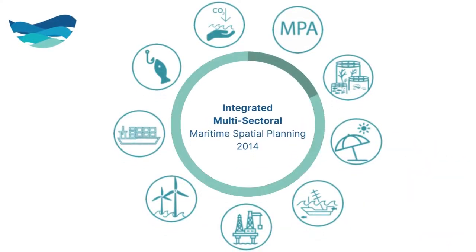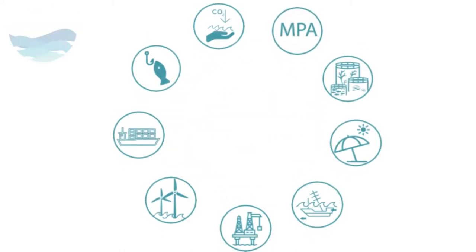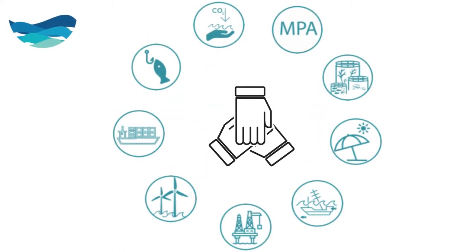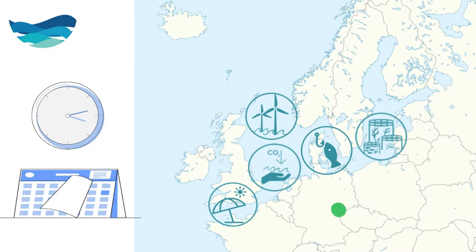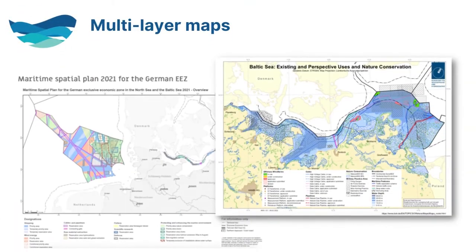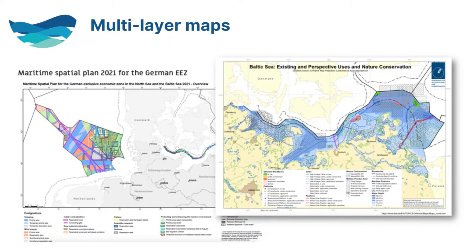A shift towards a more integrated approach to management came into being once the EU MSP directive was adopted in 2014. As a multi-sector approach, MSP seeks to integrate the needs of different sectors, finding synergies rather than keeping them separate. Space is allocated in anticipation of future development, giving an indication of suitable sites and corresponding uses. This has resulted in plans with multiple layers which reflect designations for different sectors.